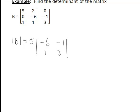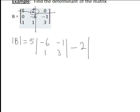Then it will be minus the element in the second column of row 1, which is 2. Again, imagine visually covering the column and row that contain that element, which will leave you with the determinant of the matrix 0, 1, negative 1, 3.